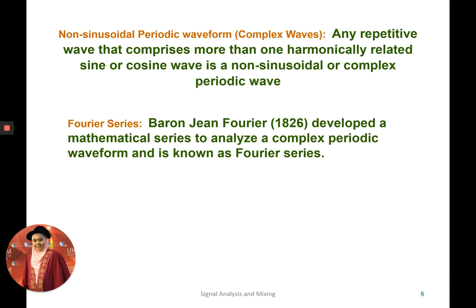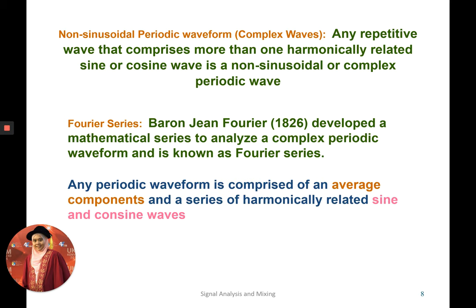Another shape of signal that somehow a little bit complicated is what we call as non-sinusoidal periodic waveform or known as complex wave. This complex wave basically is a waveform that is harmonically related to a sine or cosine wave, and it's a non-sinusoidal periodic wave. In order for us to know this kind of waveform, we need to do some analysis using what we call as Fourier series.